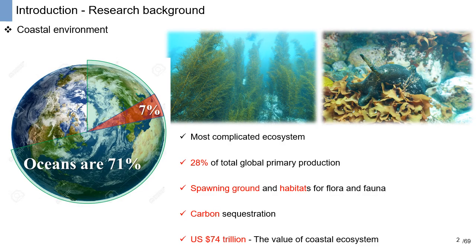In the introduction, I showed some research background. The coastal environment is very important in the earth's ecosystems. Oceans cover 71% of the surface of the earth. However, only 7% of that ocean is coastal areas. Although this coastal area is very small compared to the oceans, it has the most complicated ecosystem on earth. And 28% of total global primary production occurs in this area.